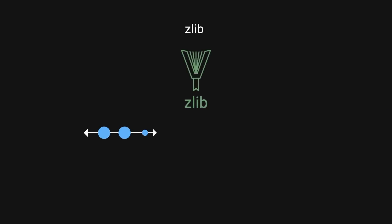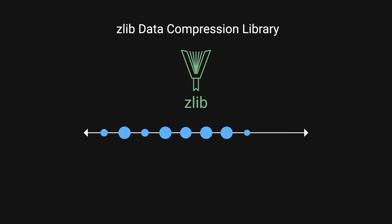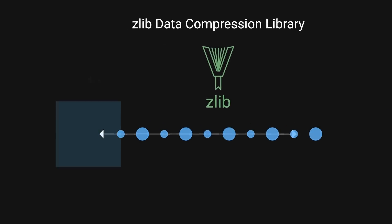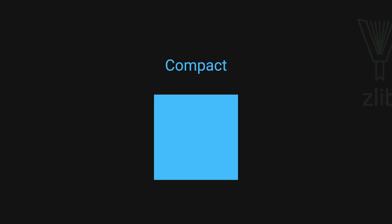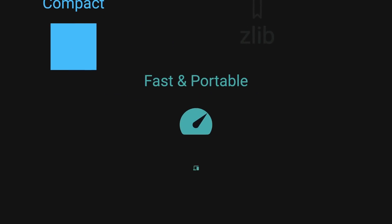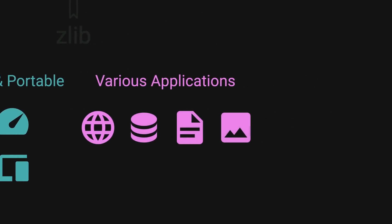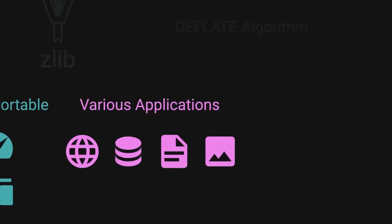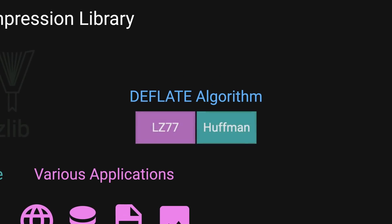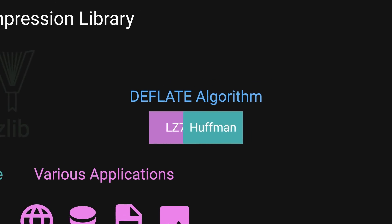Zlib — not this one — is a widely used data compression library that provides lossless compression. It is designed to be compact, fast, and portable, making it suitable for a variety of applications. It uses the deflate compression algorithm, which combines LZ77 and Huffman coding.